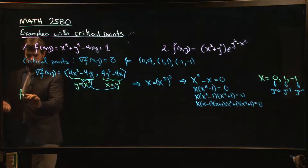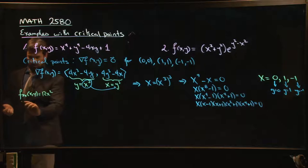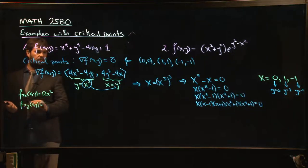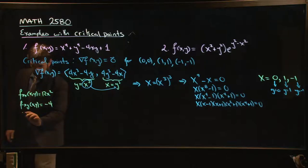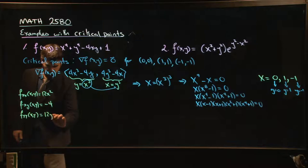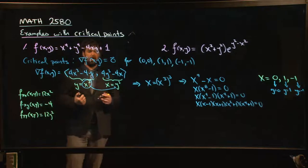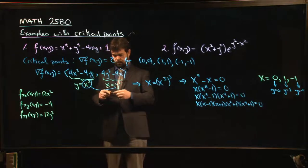To do the second derivative test, you need the second derivatives. So let's work out what those are. If we take the x derivative of the x derivative, we get simply 12x². Our cross term, you'll notice, is going to be -4, whether you take the y derivative here or the x derivative here. Equality of mixed partials, as you expect. And the y derivative is going to be 12y².